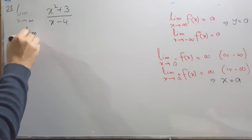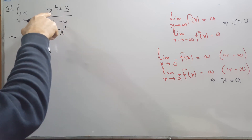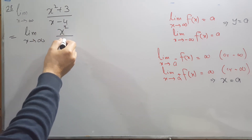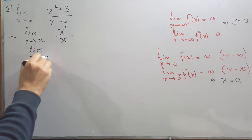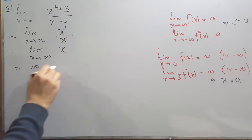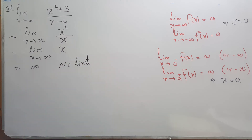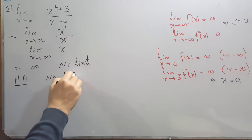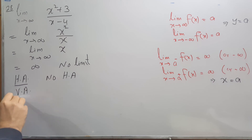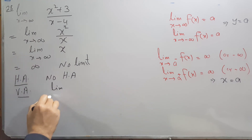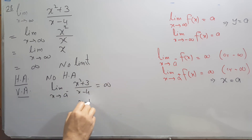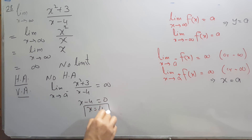For the next problem we again apply the highest-power rule. The highest power of x in the numerator is x², and in the denominator it is x. The x² divided by x leaves x, so as x approaches infinity the expression approaches infinity — no finite limit. Therefore there is no horizontal asymptote. For the vertical asymptote, setting x - 4 = 0 gives x = 4 as the vertical asymptote.